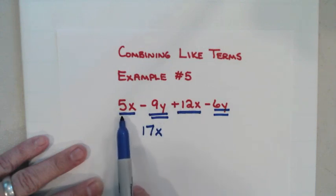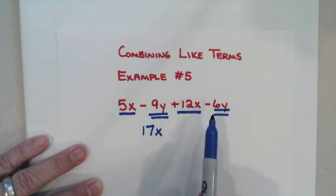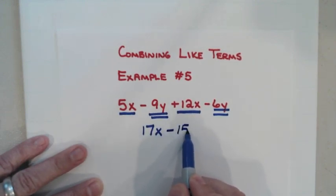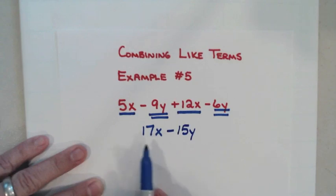The signs were the same here. For these x's, I added them together and kept the sign. Same thing here. 9 plus 6 is 15. And I keep the sign, negative 15y. These are in alphabetical order. This is the correct answer.